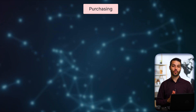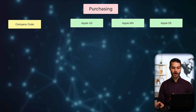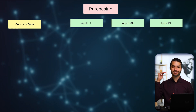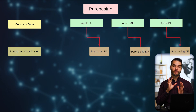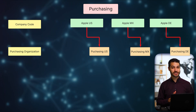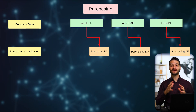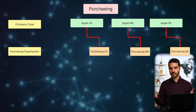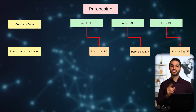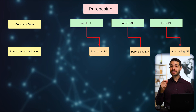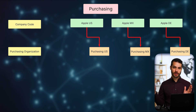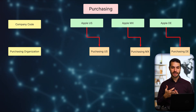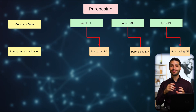Purchasing is in many ways a mirror image of the sales organizational structure, and it also starts with company codes — Apple US, Apple Mexico, and Apple Germany. Below that, we have purchasing organizations. Unlike the sales side where it's common to have multiple sales orgs per company code, purchasing tends to have just one purchasing org per company code. You can even have one purchasing organization serve multiple company codes — for example, if all your company codes are in Europe, one central purchasing org might serve Germany, France, and Italy.